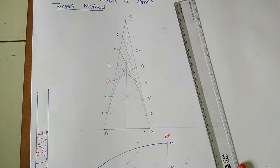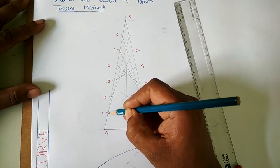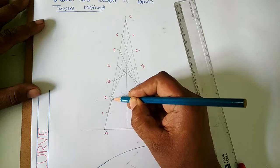Now with the help of HB pencil I'll draw a curve that will be tangent to all those lines.